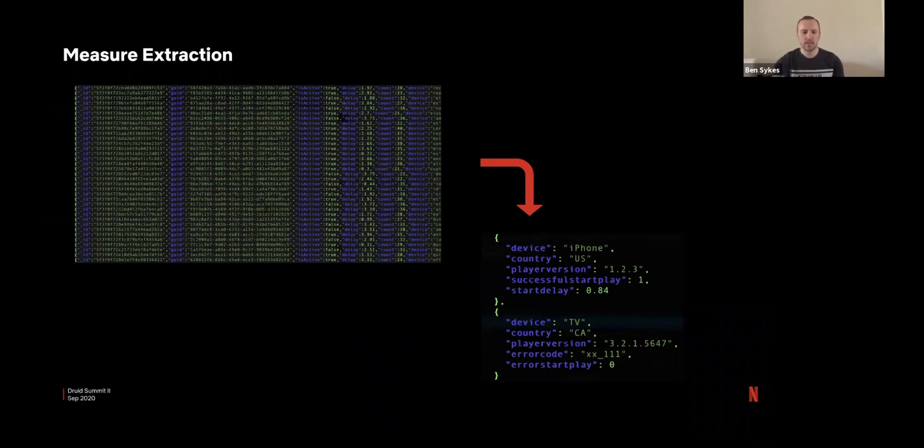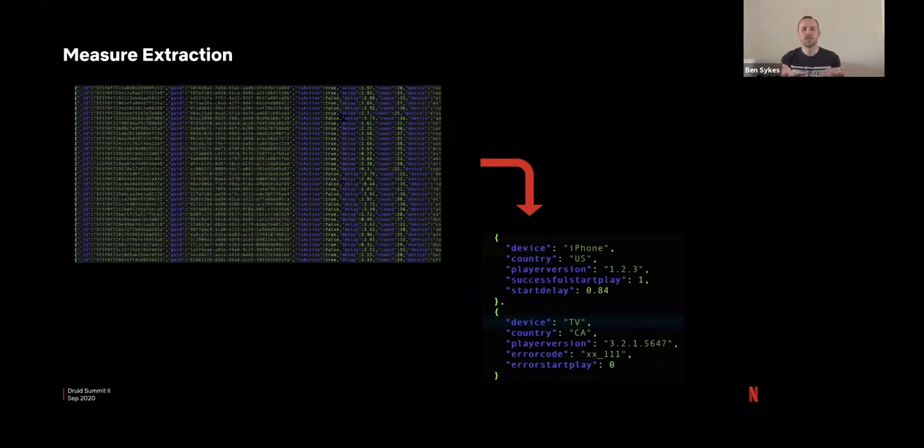So in this case, we pulled out some fields. We do a little bit of enrichment here as well in real-time. So if we get just a particular device type, we can enrich that with the model and the manufacturer and that kind of thing.